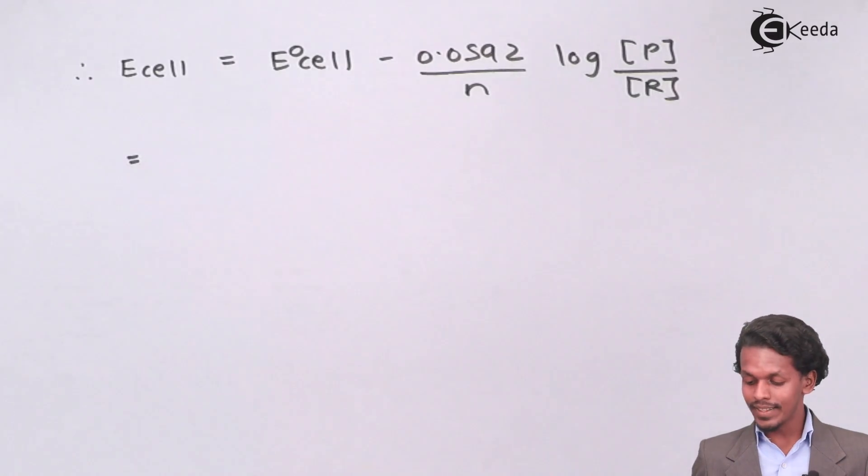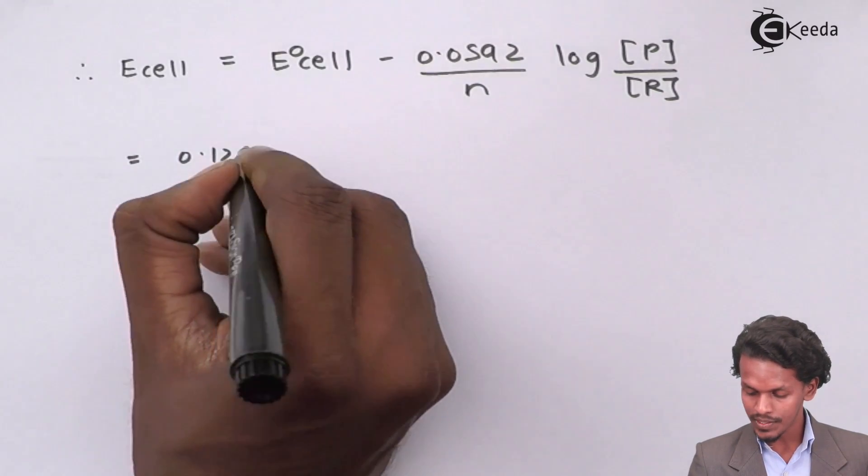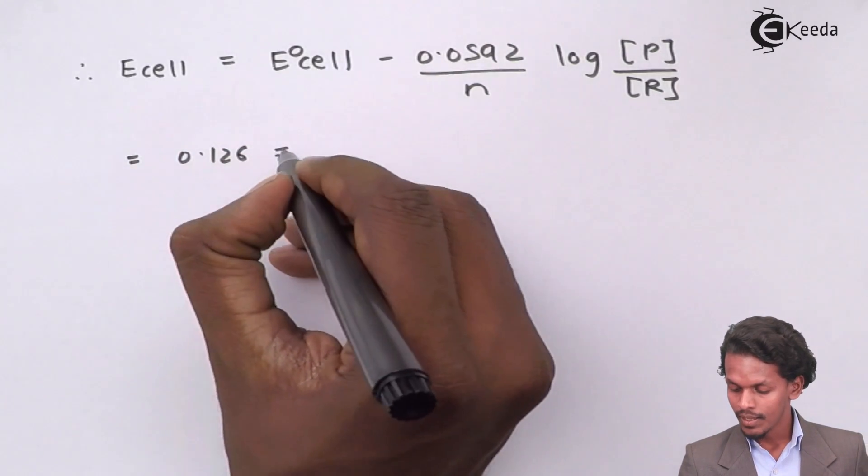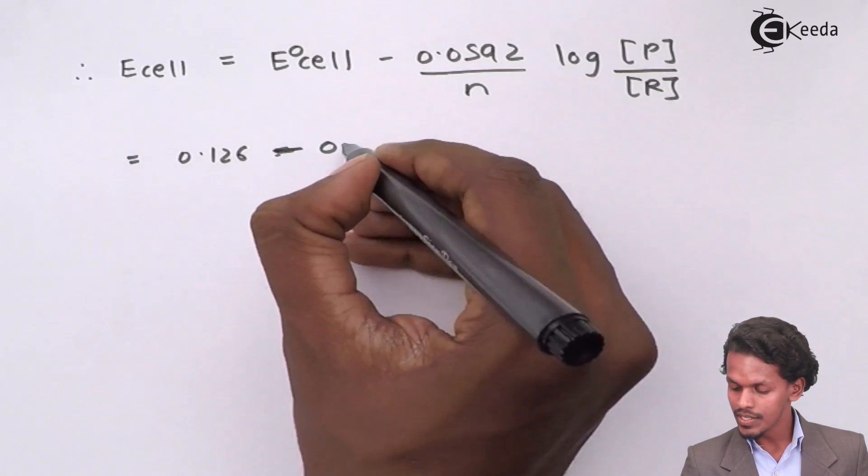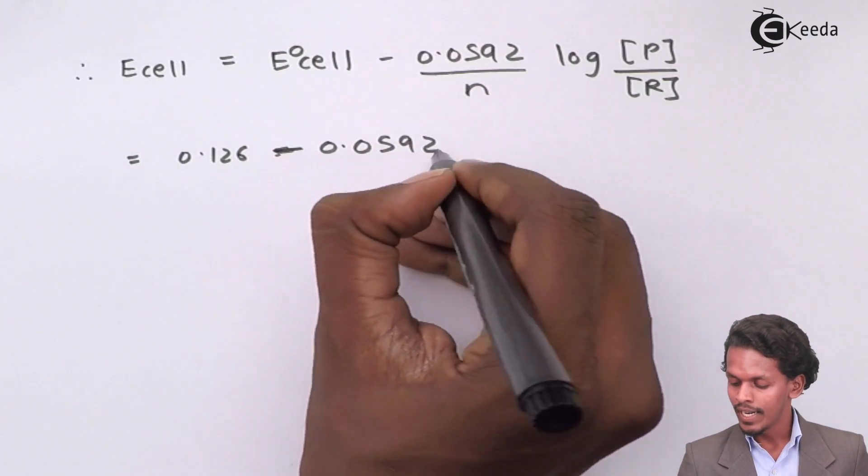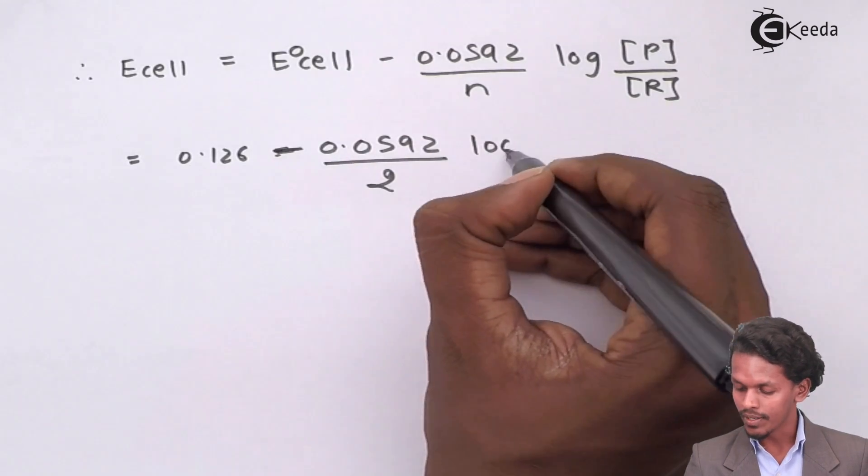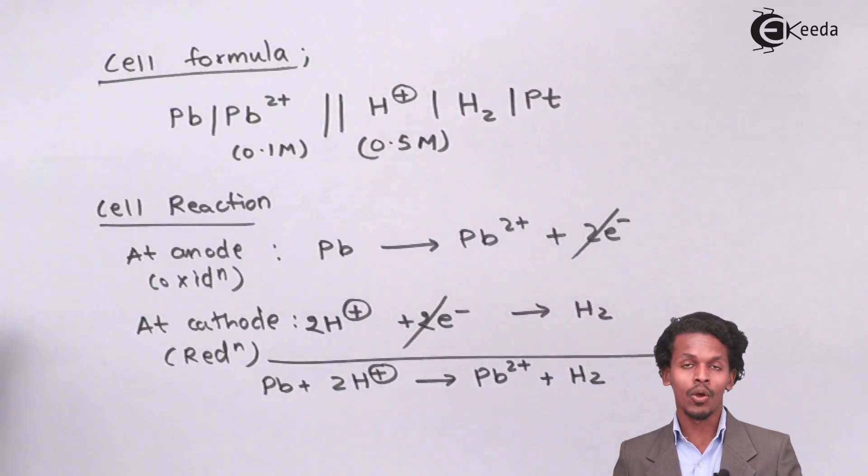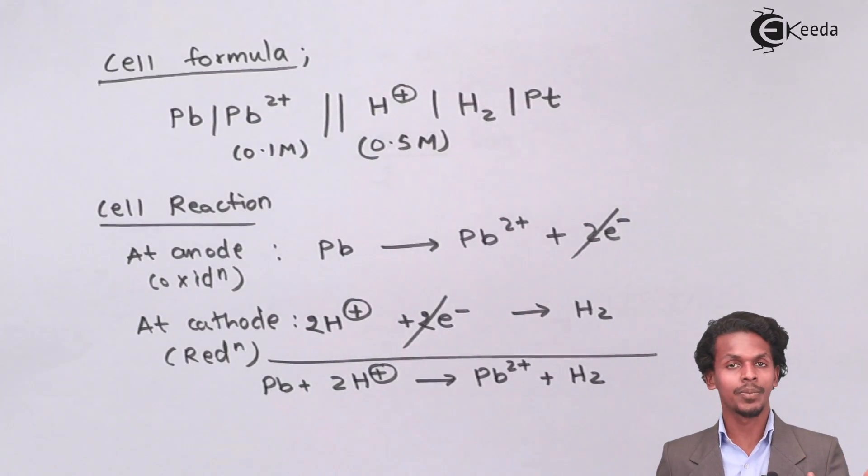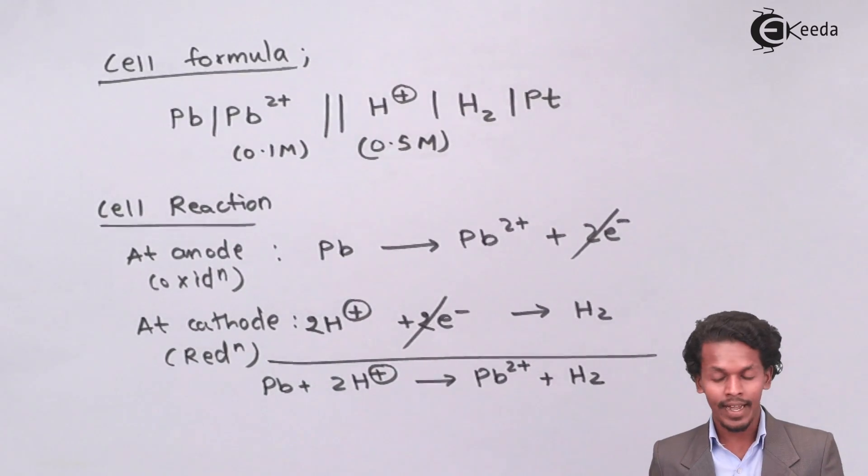I could write the E° cell that we calculated was found to be plus 0.126, minus 0.0592 divided by n. In this case, n is 2, log of products.